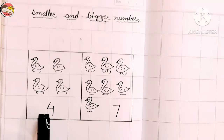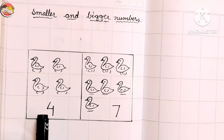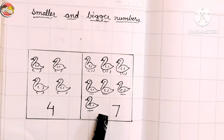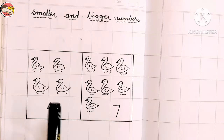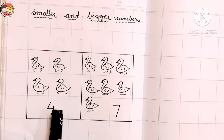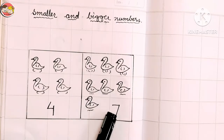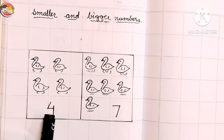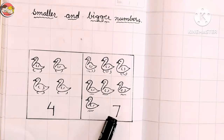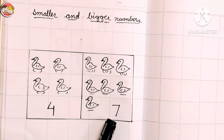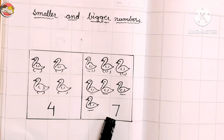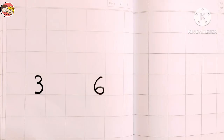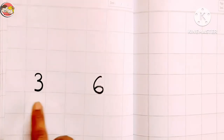Now tell me, which box has fewer ducks? Yes — we can easily see that the number four is less than the number seven. So whichever is less, that is the smaller number. Here, number four is the smaller number and number seven is the bigger number. So number four is smaller than number seven.